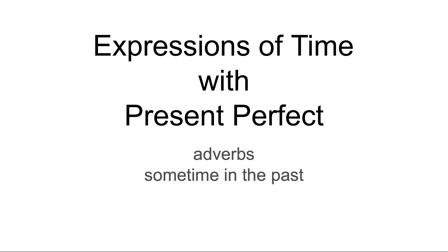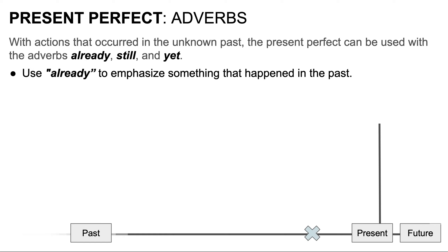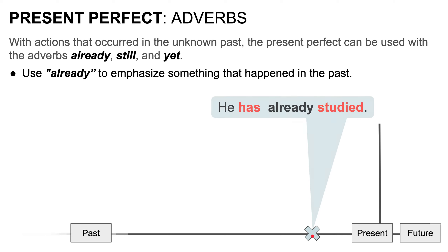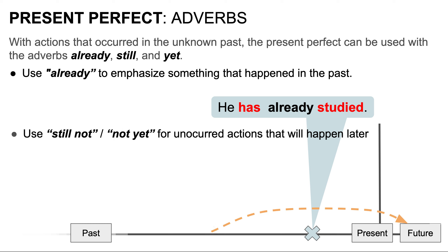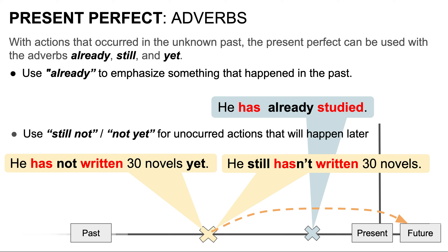Now we're going to look at adverbs for actions that occur sometime in the past. With actions that occurred in the unknown past, the present perfect can be used with the adverbs already, still, and yet. Use already to emphasize that something happened in the past. For example, he has already studied. We use still not and not yet for actions that did not occur but will or may occur in the future. For example, he has not written 30 novels yet, and he still hasn't written 30 novels.